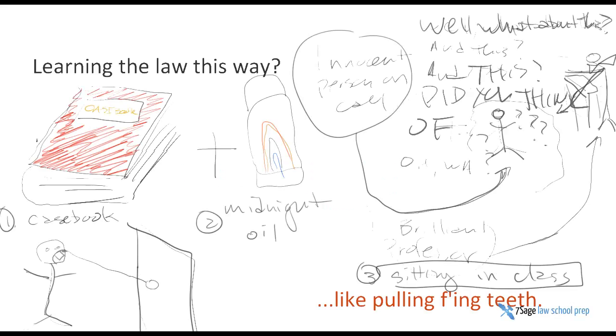Sorry for the crudeness of the drawings, but this is what you're normally asked to do. The casebook itself sets out a number of random facts from an appellate case and doesn't necessarily directly set out the elements of specific crimes or torts or parts of contract law or whatever. Nevertheless, you're told read the casebook, read the casebook.